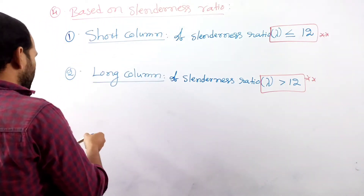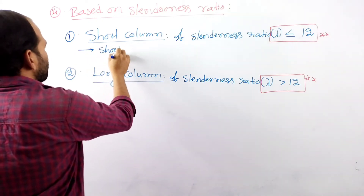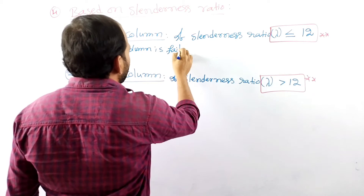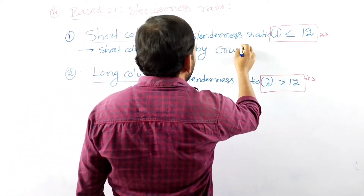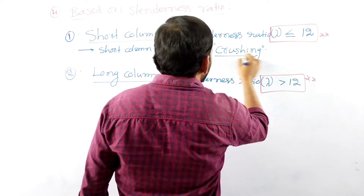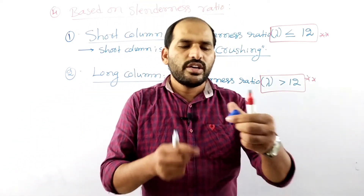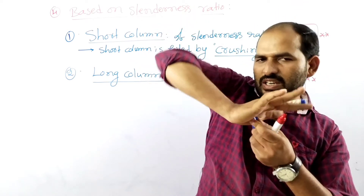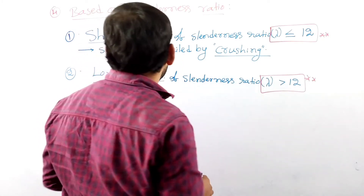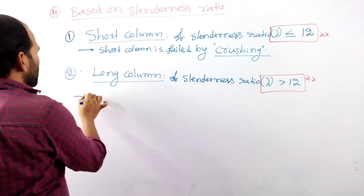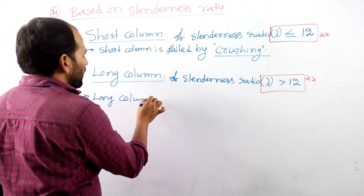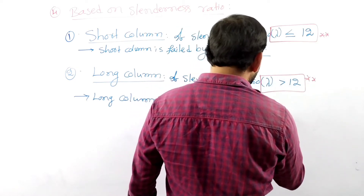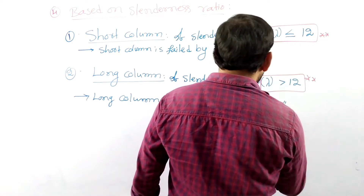Short column fails due to the application of external load — it fails by crushing. So short column is failed by crushing action. Long column is failed by buckling action.